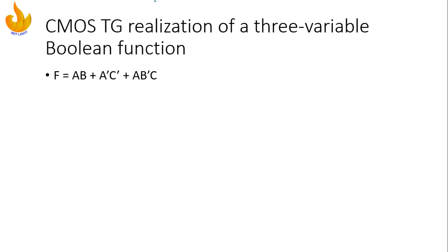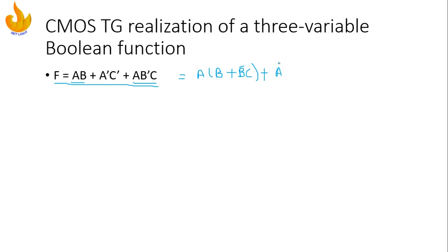Next we will see CMOS transmission gate realization of a three-variable Boolean function. The function is F = AB + ĀC̄ + AB̄C. Let's simplify this function first. We can see that A is common in some terms, so we rewrite the equation as F = A(B + B̄C) + ĀC̄.